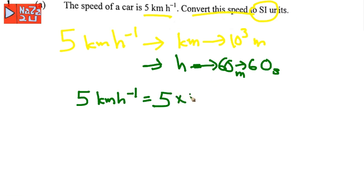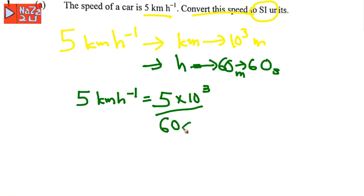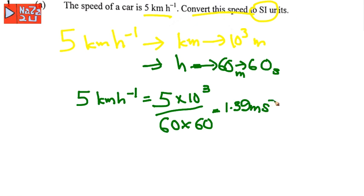So 5 km/h equals 5 times 10³ meters divided by hours. One hour equals 60 minutes and one minute equals 60 seconds. The result is approximately 1.39 meters per second.